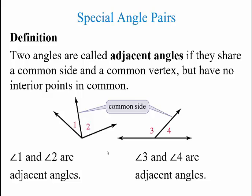We're going to start with some definitions. Two angles are called adjacent angles if they share a common side and a common vertex, but no interior points are common. For example, angles 1 and 2 here are adjacent angles because they have a common side and the same vertex. The same with angles 3 and 4 — we have a common side and a common vertex. Each of these are adjacent angles.